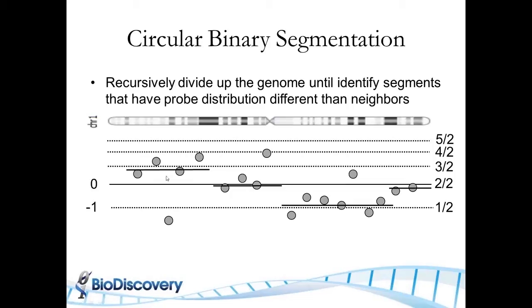So here's one segment that I'm drawing with this black line, the median of the probe, and another segment here. So once CBS has gone through and chopped up the genome into segments where the distribution of the probes are different from its neighbors, then you can specify certain cutoffs for gain and loss. So here, this dashed blue line is the copy number gain. So if a segment is above that gain cutoff, it becomes a gain. And if a segment is below this loss threshold, then this segment becomes a loss.